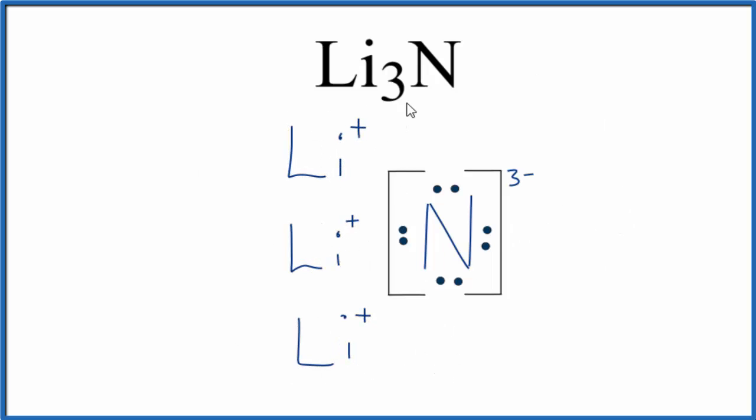So for our Lewis structure here for lithium nitride, these three lithium atoms are ionically bonded to the nitrogen ion, the nitride ion.